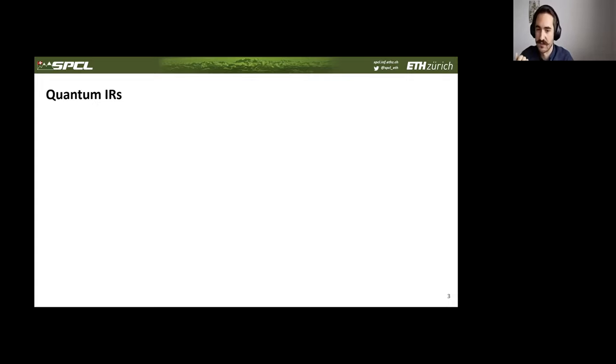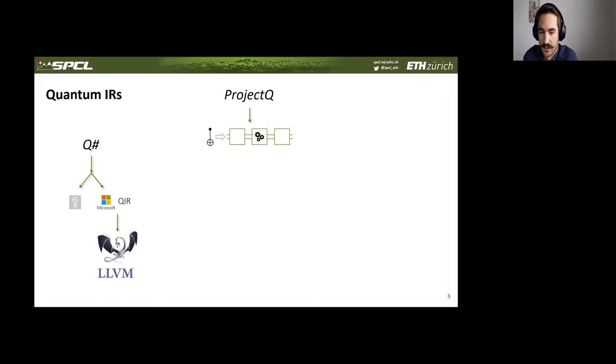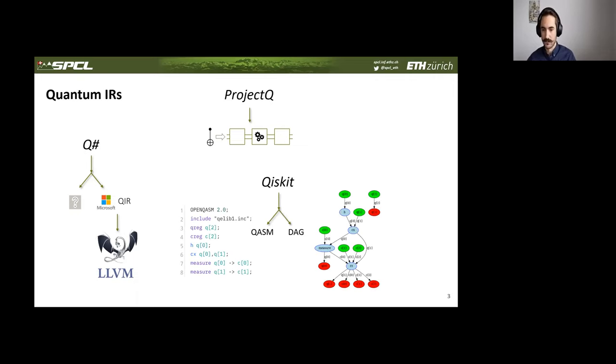So what we wanted to look at was what should an IR look like such that it optimally supports compilation and optimization tasks in the quantum domain going forward. Let's look at existing quantum programming frameworks and identify IRs that they use. There's Project Q, for example, which was developed here at ETH. And while it contributed some great ideas for near-term compilation of quantum programs, it doesn't really have a central IR. Instead, gates or quantum instructions are individually fed through a pipeline of compiler modules.